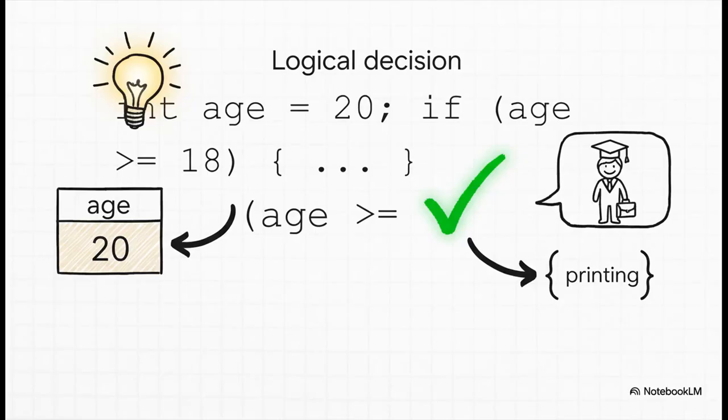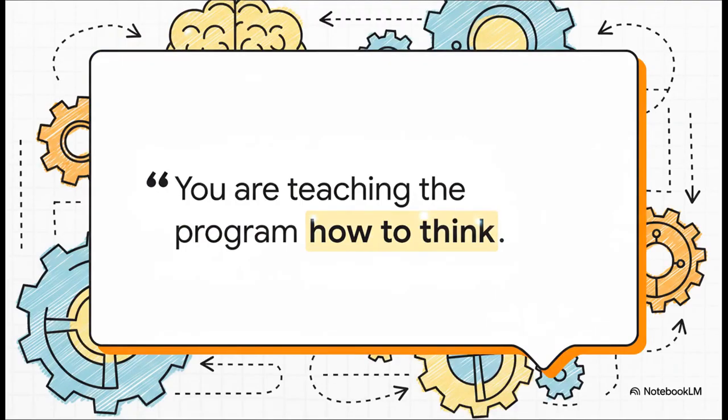And here is a perfect real world example. You've seen this a thousand times. The code checks a simple condition: Is the age greater than or equal to 18? Well, since age is 20, the answer is true and the program prints out you are an adult. It's a super simple decision, but it's the exact same logic that runs age gates on websites, decides if you can see a certain movie or unlocks features in a game. And I want you to let that sink in for a second. With every if statement you write, you're not just typing commands anywhere. You are literally teaching the program how to think. You're giving it a little piece of intelligence.